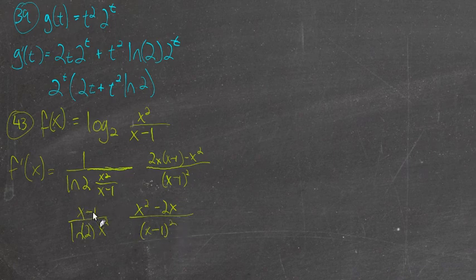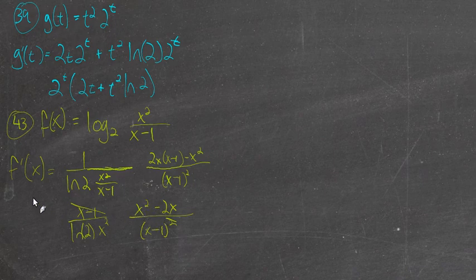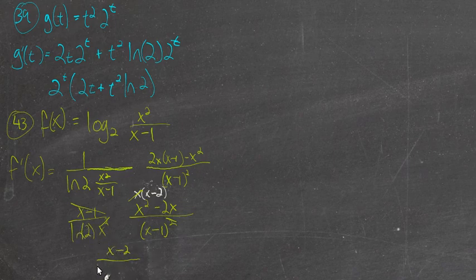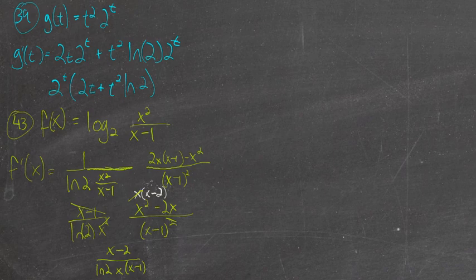We've got 2 factors of x minus 1 here and 1 here, so we can cancel one each. We can factor out an x in the numerator: x times x minus 2. We have a factor of x in the numerator and a factor of x in the denominator, so those cancel. In the numerator we have x minus 2, and that will be over the natural log of 2 times x times x minus 1. I checked the back of the book — that's exactly what they have.